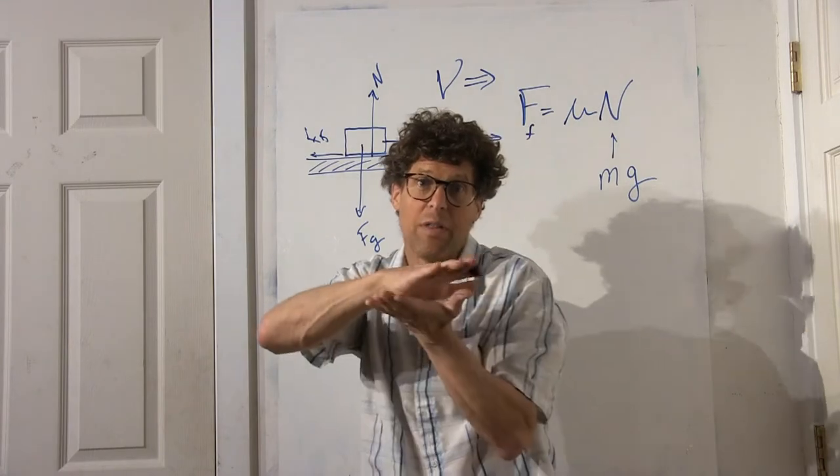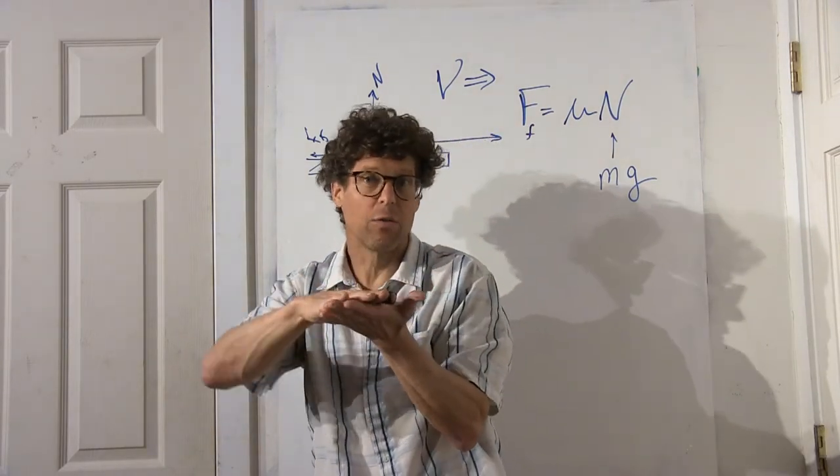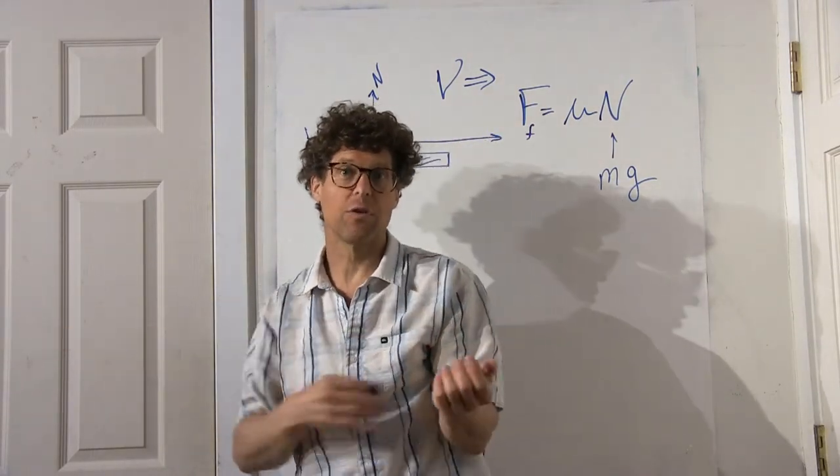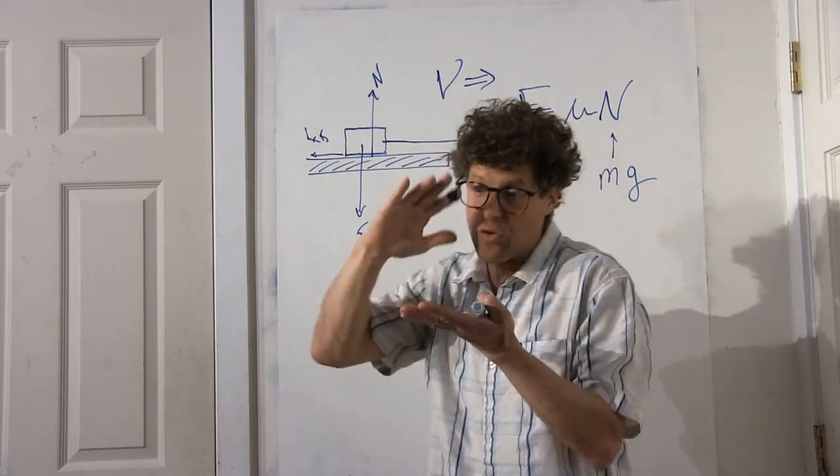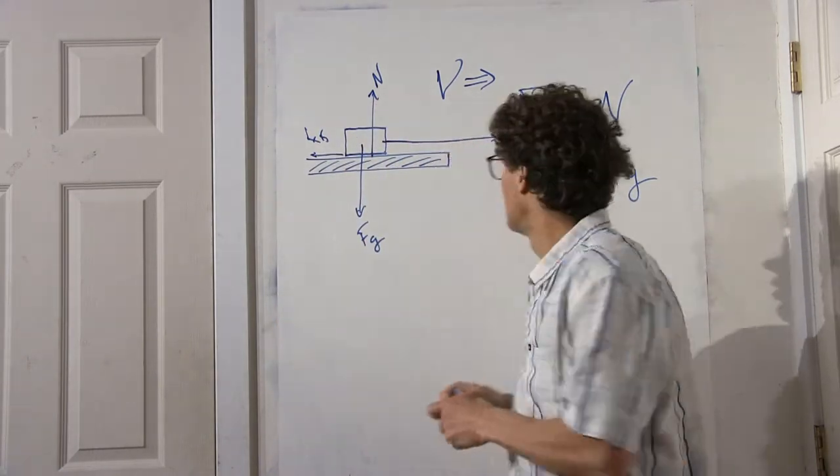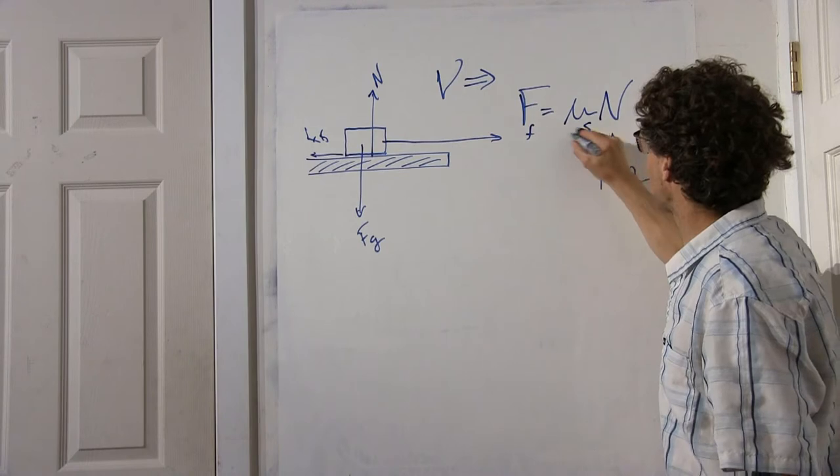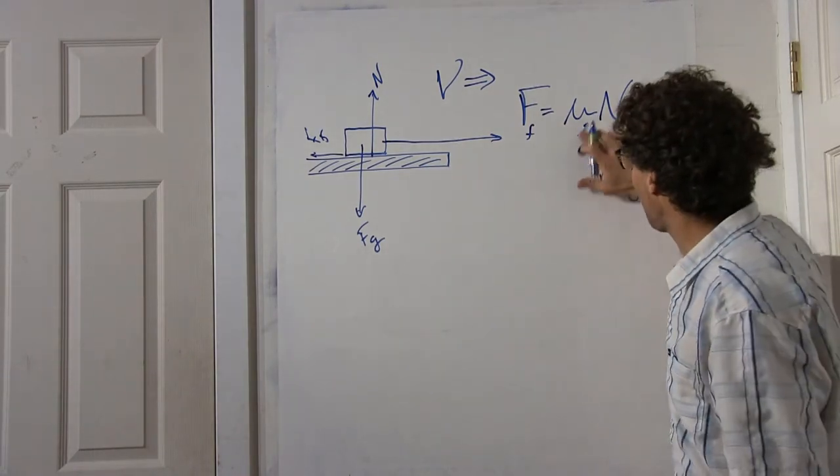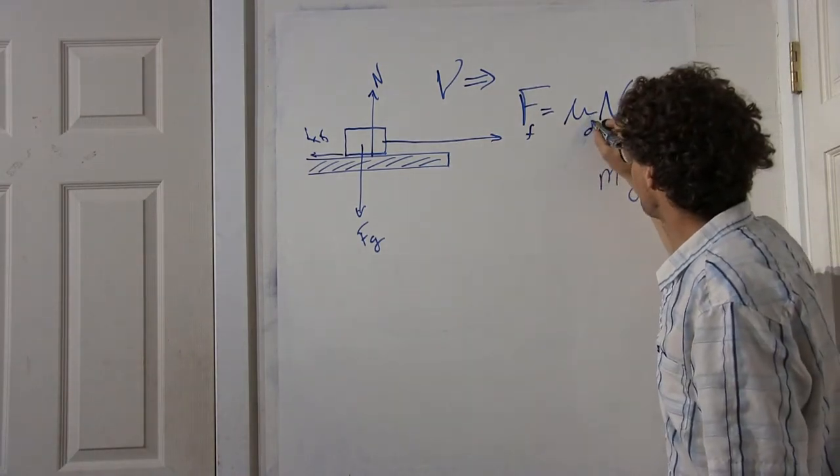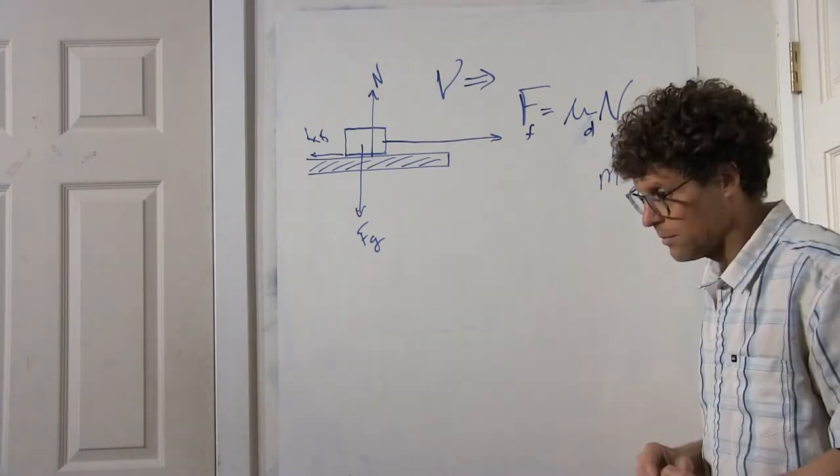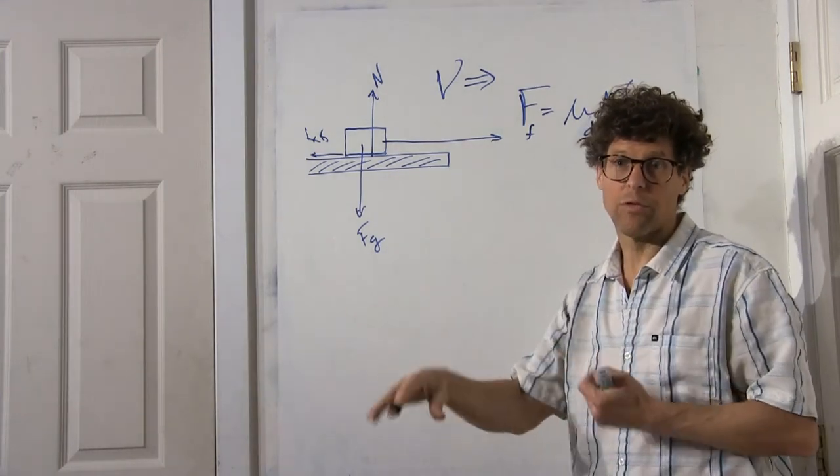Once you do, the molecules are not so attracted to each other and the frictional force decreases. When two surfaces are next to each other, we say you have a static coefficient of friction which will be higher than the dynamic coefficient of friction if the surfaces have relative motion.